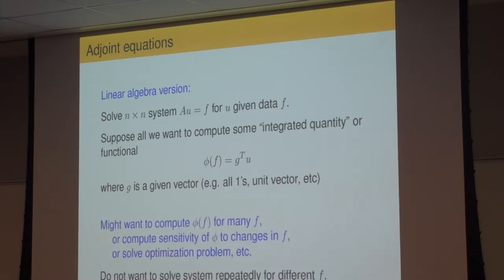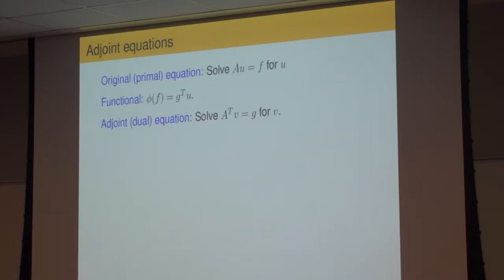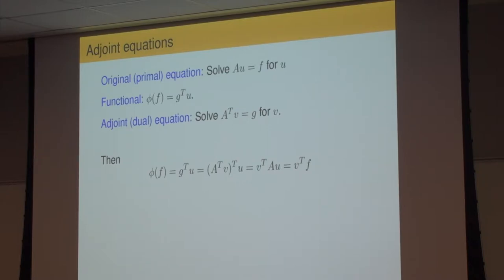An easier way is to solve the adjoint problem: A^T p = g. This is a linear system of the same size as the original. We solve it once for the vector p, and then the functional phi(f) = g^T u equals p^T A u = p^T f. So once we've solved the adjoint once for p, we can compute phi(f) for any f by a single inner product — we don't have to solve a linear system again. That's the magic of the transpose in this context.